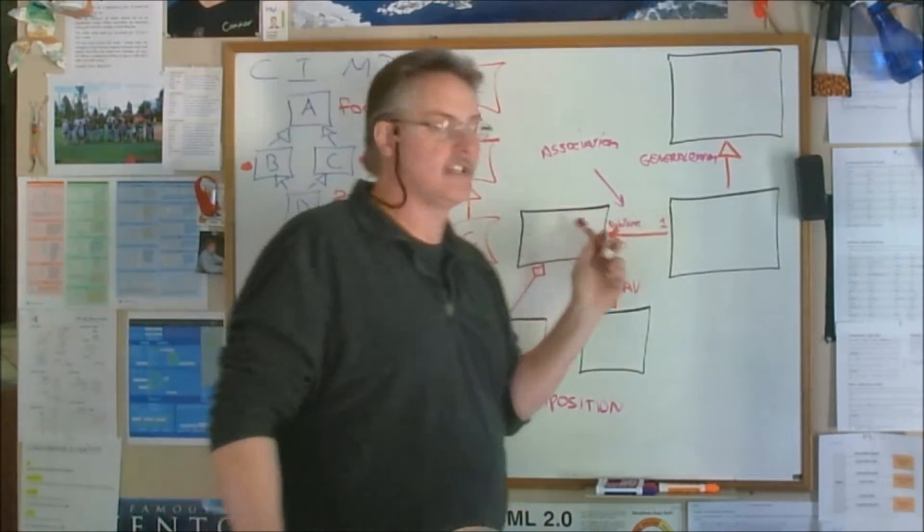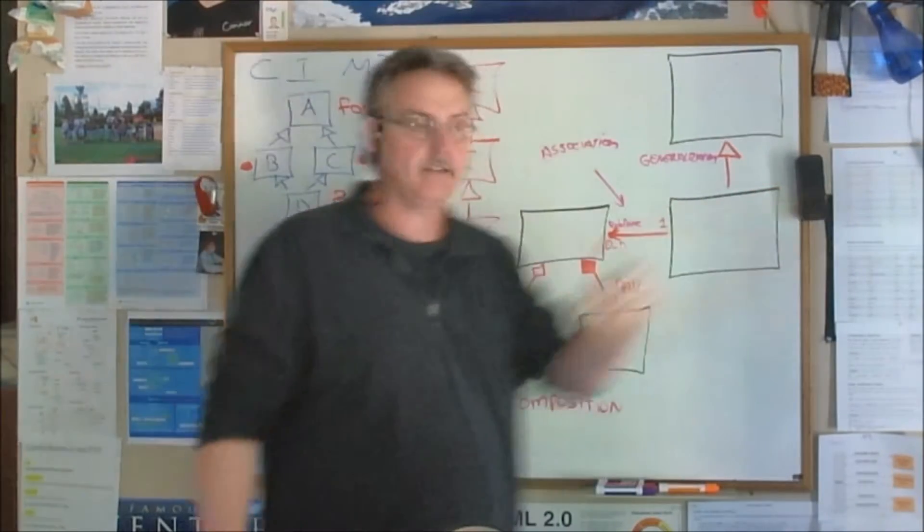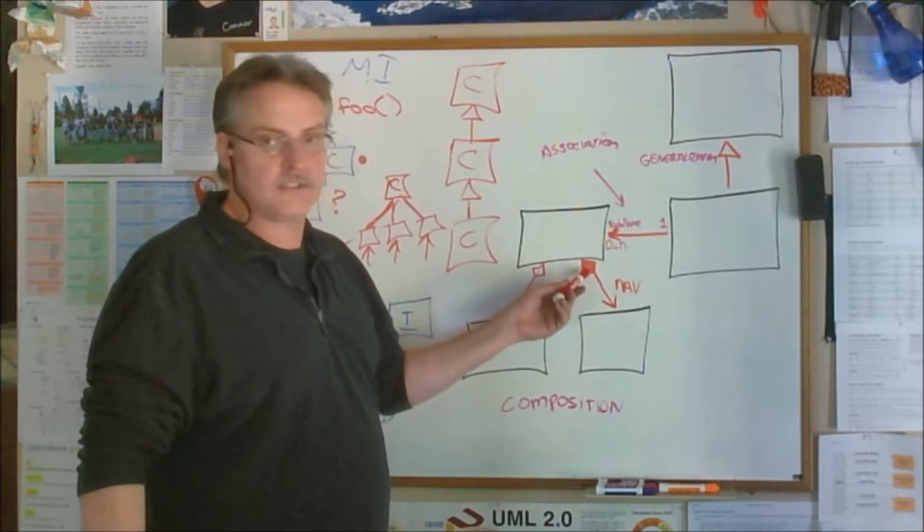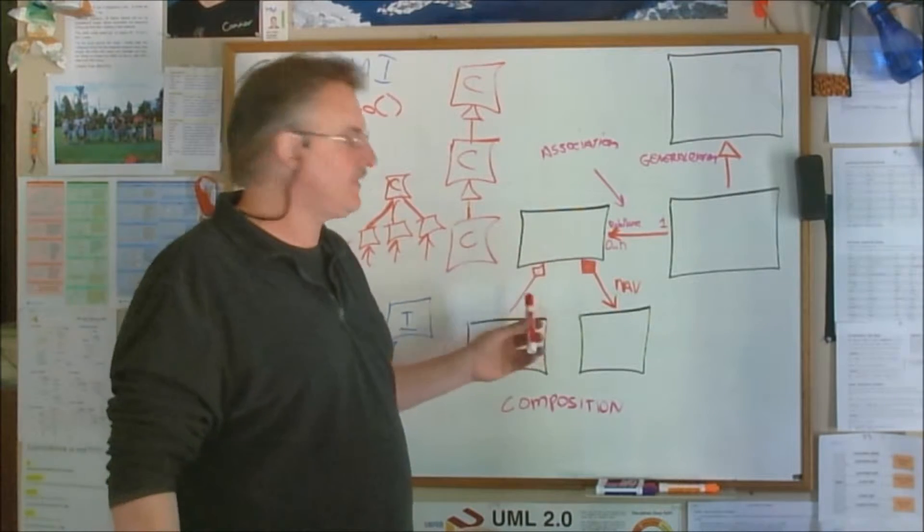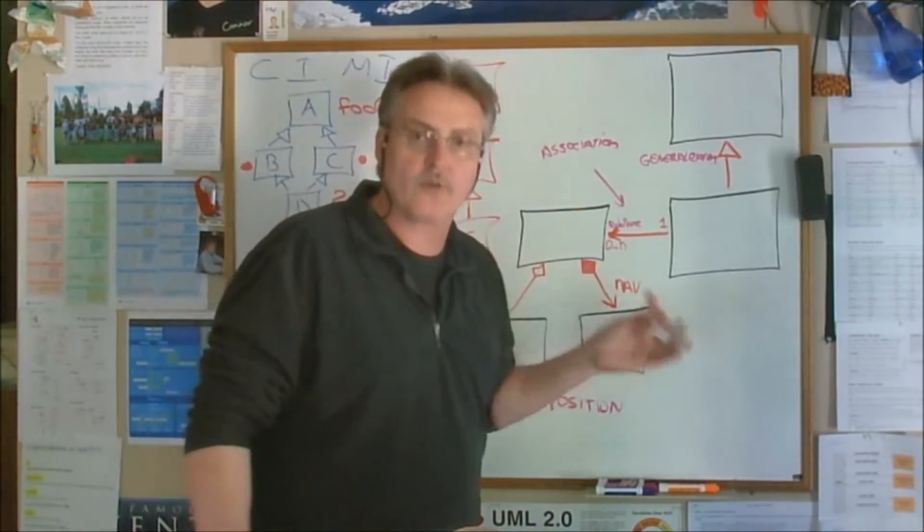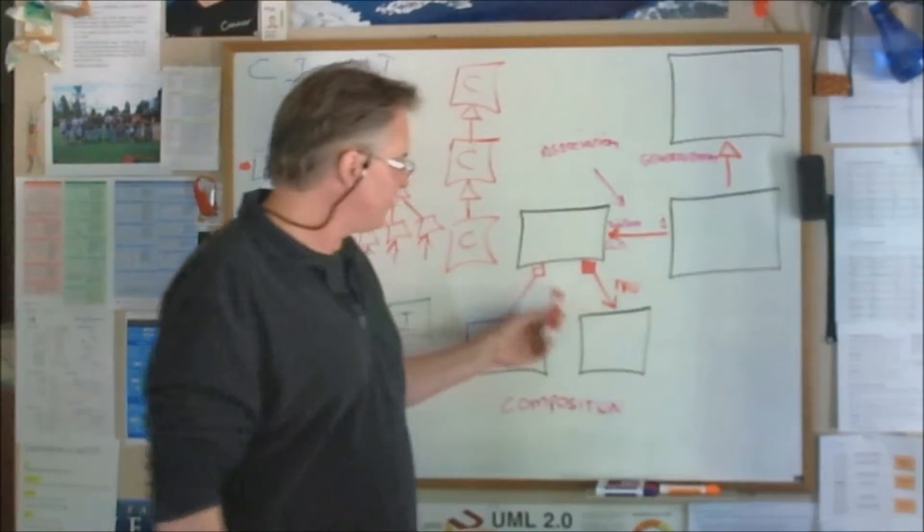It's not just that there's a dependency on that, but hey, I can navigate to that, right? This is composition, open diamond, closed diamond. Actually, so the difference here is both of these are composition, but one is a stronger form of composition. Let's talk about this one. This is weak.